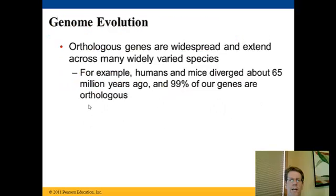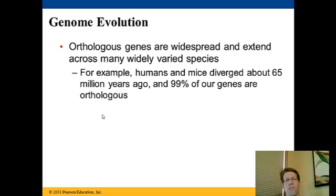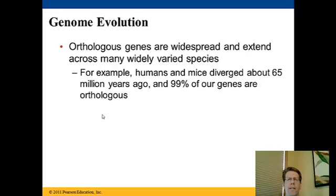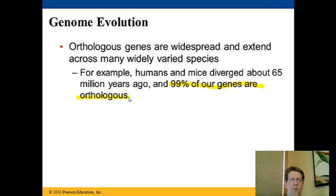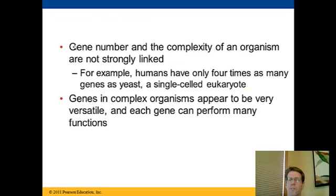Another part of genome evolution is that genes persisting in modern species have been extended over many, many generations. For example, humans and mice had a common ancestor about 65 million years ago, and as a consequence our genes are about 99% orthologous. Gene number and the complexity of the organism are not strongly linked, though.